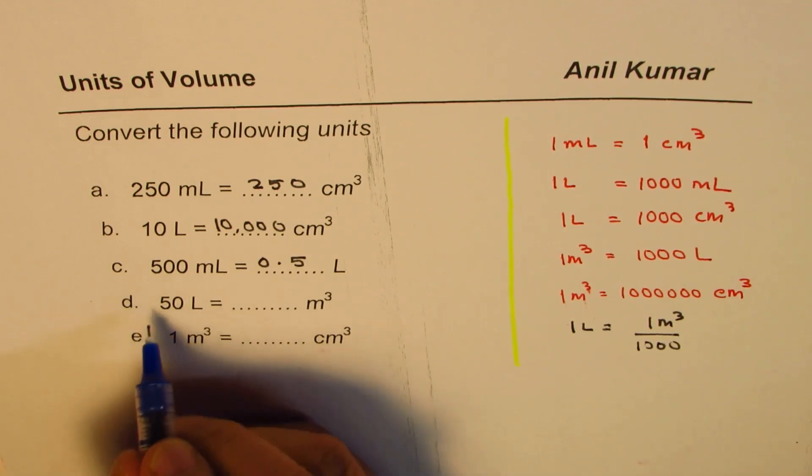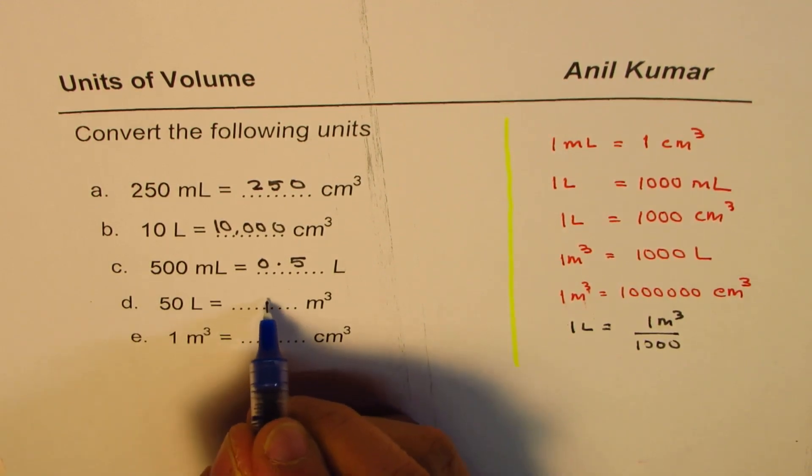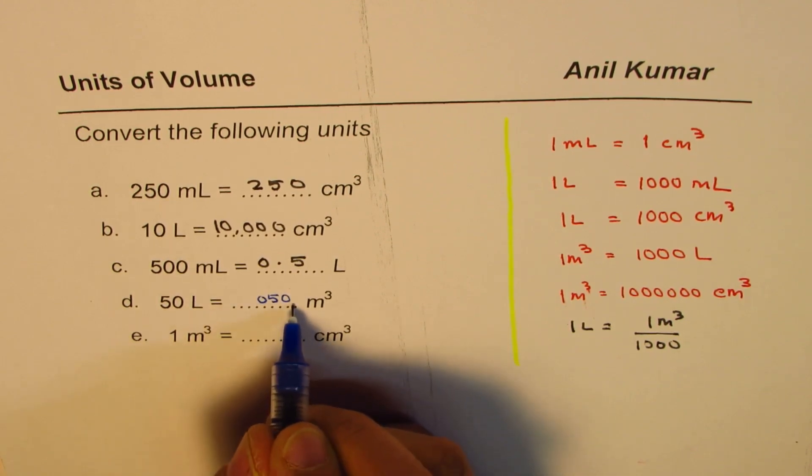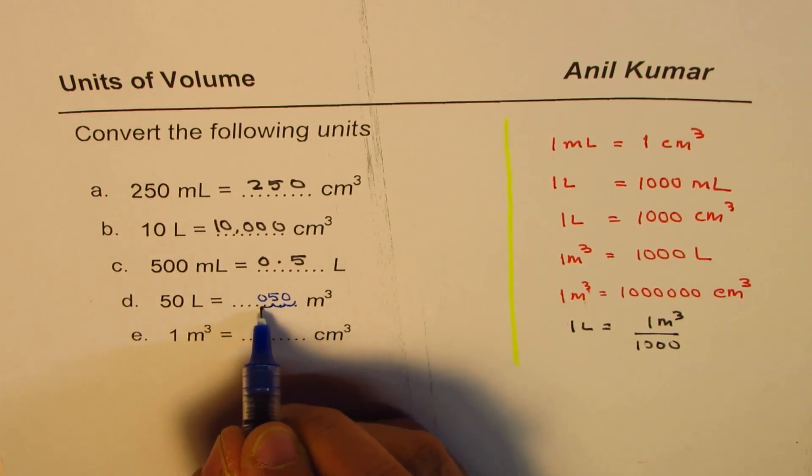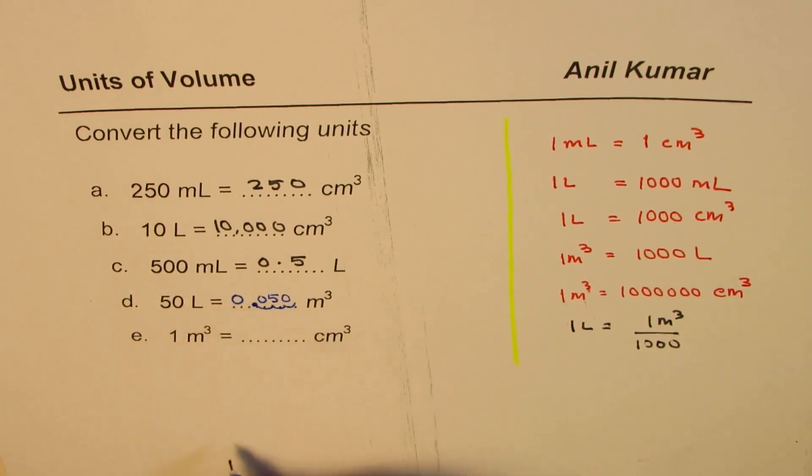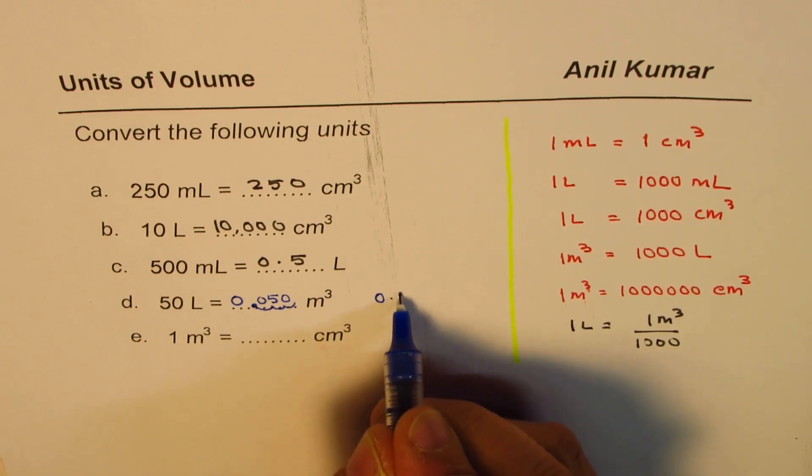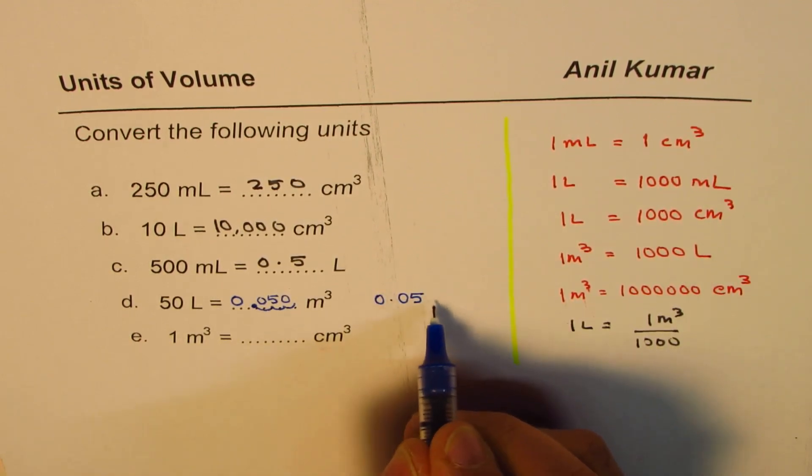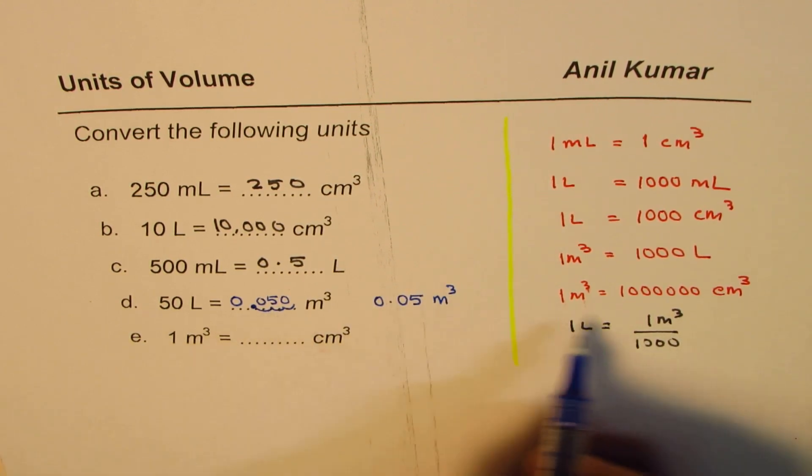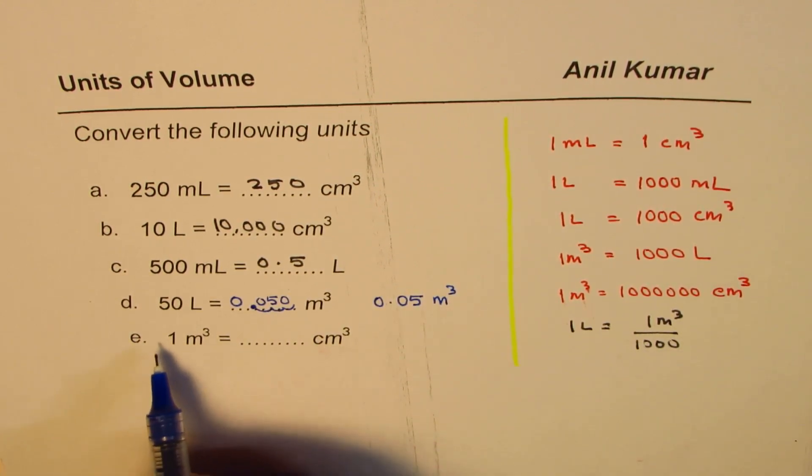If you divide by 1000, what will happen? Let me write here 50 and some zeros before it. So 1000 means the decimal moves three places, you see that? So you get 0.050 meter cubed, or 0.05 meter cubed. Divide by 1000 to get this conversion.